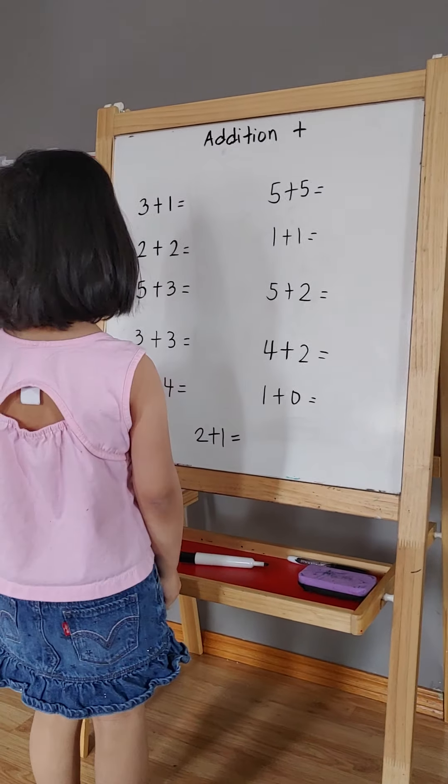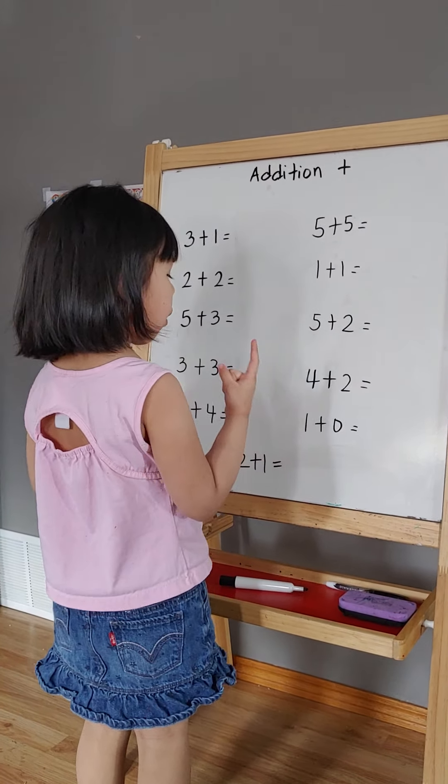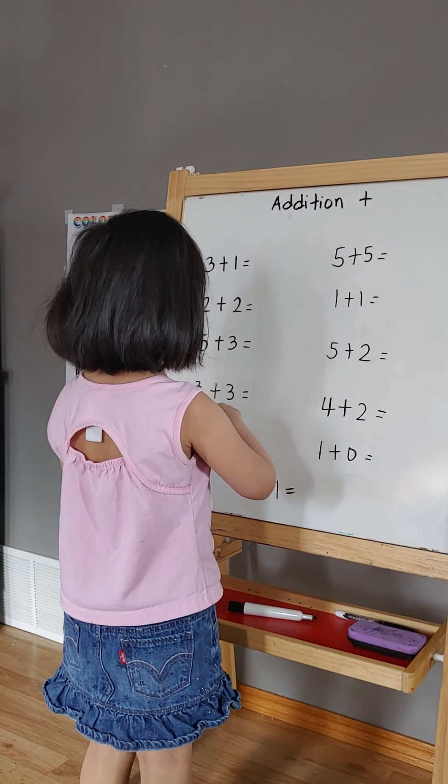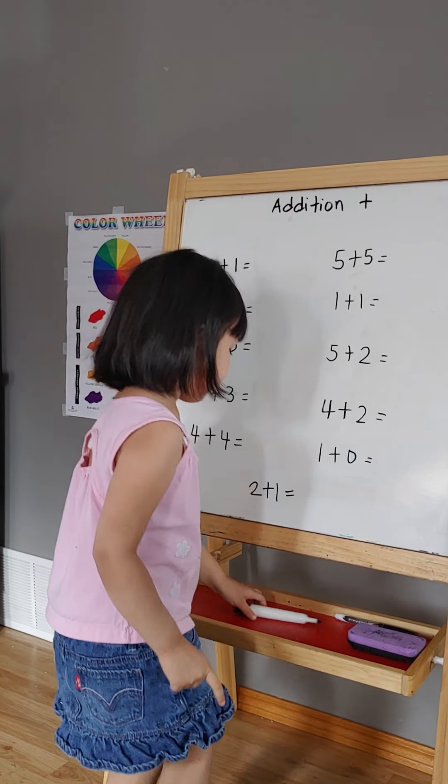3 plus 1. So put 3 on my finger and put 1 on my other finger. So count that. 1, 2, 3, 4. 4.